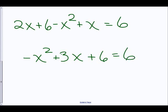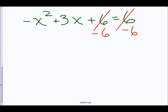Now we'll subtract 6 from both sides, and the 6s cancel out. So now we have negative x squared plus 3x equals 0.